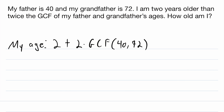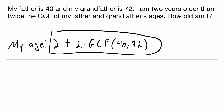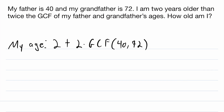So let's break this down one more time. I'm two years older than — that's this two plus — twice the greatest common factor of my father and grandfather's ages. That's two times the greatest common factor of my father and grandfather's ages. So now we just have to do this computation. Let's find the greatest common factor of 40 and 72.